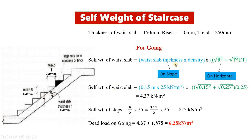For going, the self weight of waist slab equals thickness of waist slab into unit weight of material into √(r² + t²) / t, where r is riser and t is tread. The waist slab thickness is 150 mm, so 0.15 into 25 (RCC), multiplied with √(0.15² + 0.25²) / 0.25. We get self weight of waist slab as 4.37 kN per meter square. Next, self weight of steps equals riser/2 multiplied with unit weight of RCC: 0.15/2 × 25 = 1.875 kN per meter square. Adding both, total dead load on going = 6.25 kN per meter square.